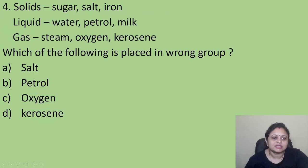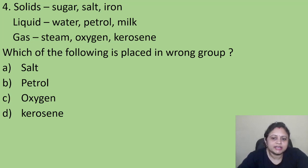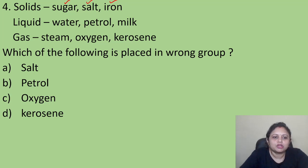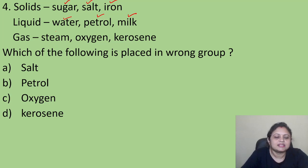Coming to the next question. Solids: sugar, salt, iron. Liquid: water, petrol, milk. Gas: steam, oxygen, kerosene. Which of the following is placed in the wrong group? Sugar is solid, salt is solid, iron is solid. Water is liquid, petrol is liquid, milk is also liquid. Coming to the gas group: steam is gas, oxygen is gas — but kerosene is not a gas.